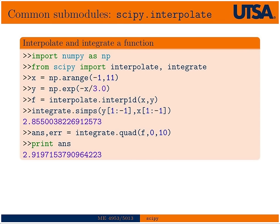Another module you might use is interpolate. Here I'm going to interpolate some data. Since I haven't shown you how to plot from within NumPy/SciPy/Python yet — we'll cover matplotlib next time — I'll compare two functions by looking at their integrals. If their integrals are close to the same, it's a quick check, though it's by no means a guarantee that similar integrals means similar functions.